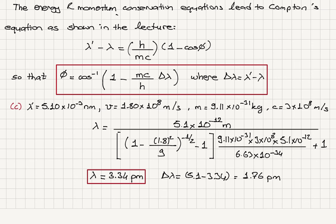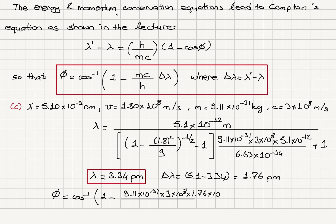Now we calculate the scattering angle: phi equals cosine inverse of one minus m times c times delta lambda divided by h. Substituting m equals 9.11 times 10 to the minus 31 kg, c equals 3 times 10 to the 8 m/s, delta lambda equals 1.76 times 10 to the minus 12 meters, and h equals 6.63 times 10 to the minus 34 joule seconds, we get a scattering angle of 74 degrees.